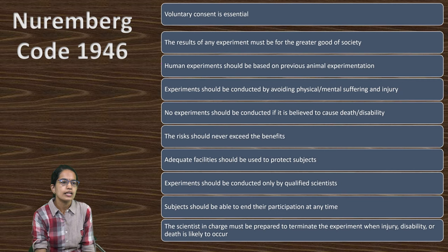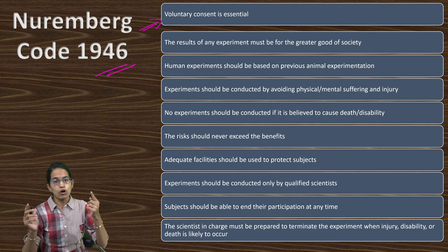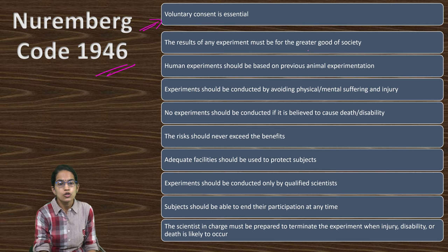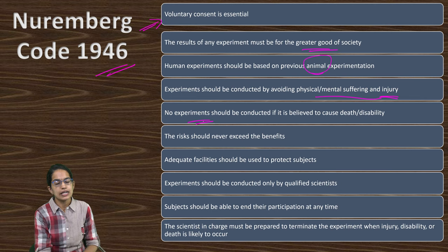The code stated that voluntary consent of an individual is essential — when taking any subject for experimentation, you must obtain their voluntary consent. The results of experiments should be for the good of society. Before being done on human beings, experiments should be done on animals first. There should be no physical or mental suffering inflicted on an individual, and no experiment should be conducted if it is believed it can lead to death or disability. The risk should never exceed the benefits.